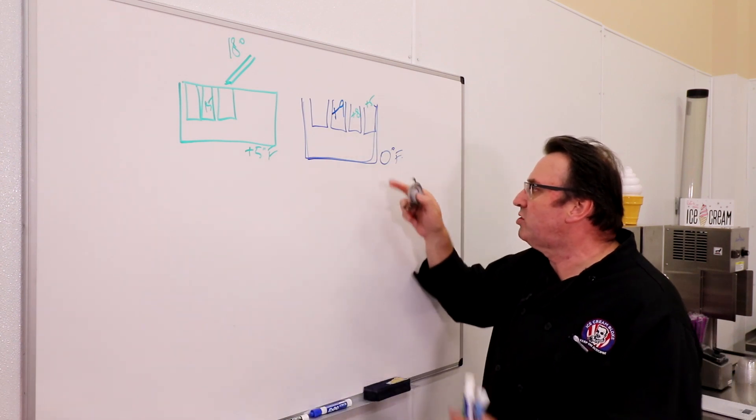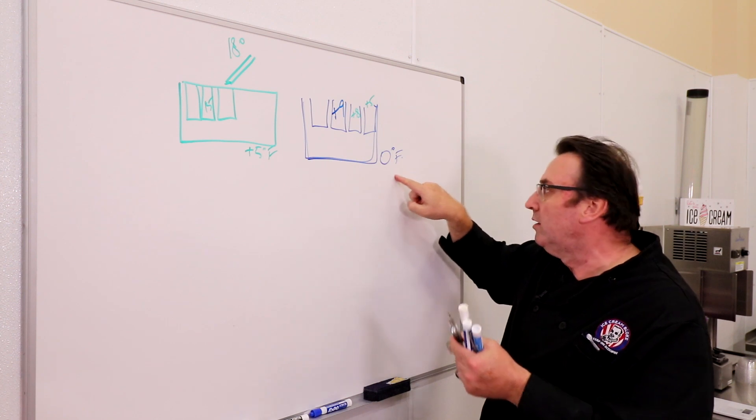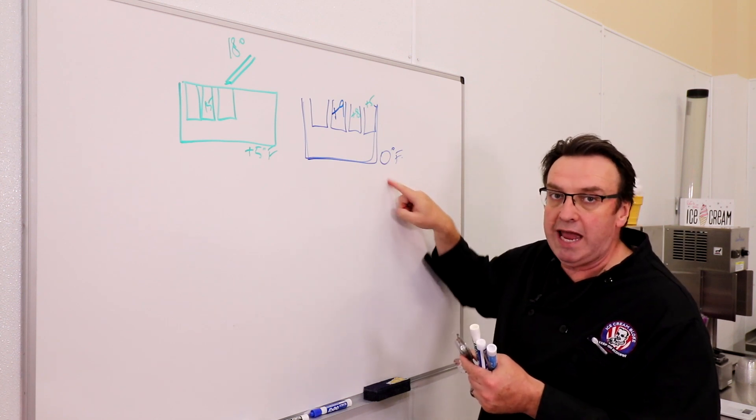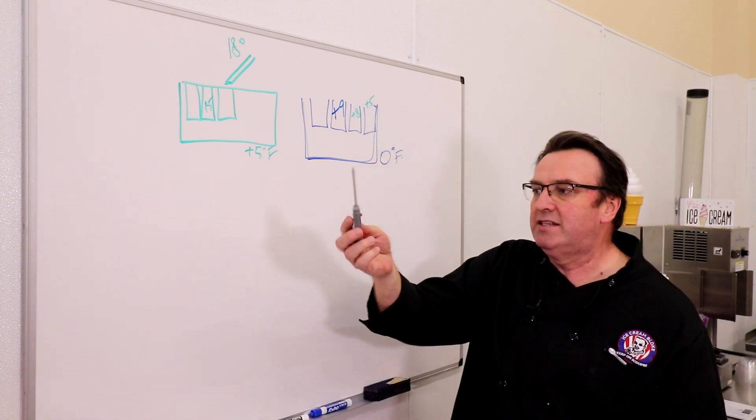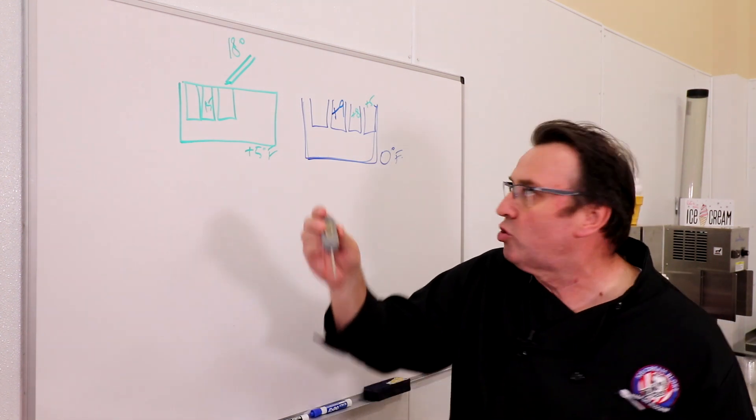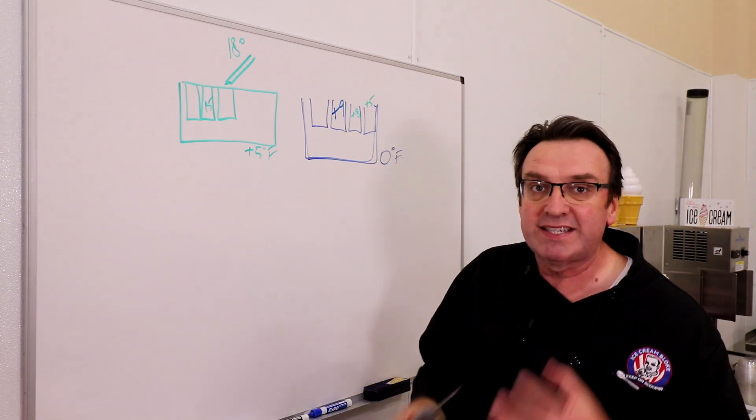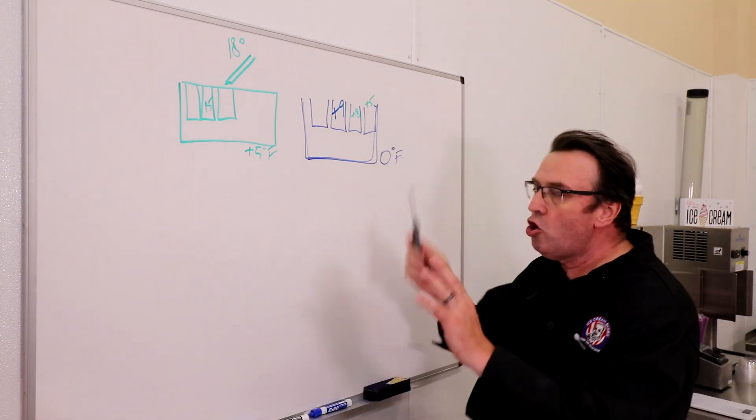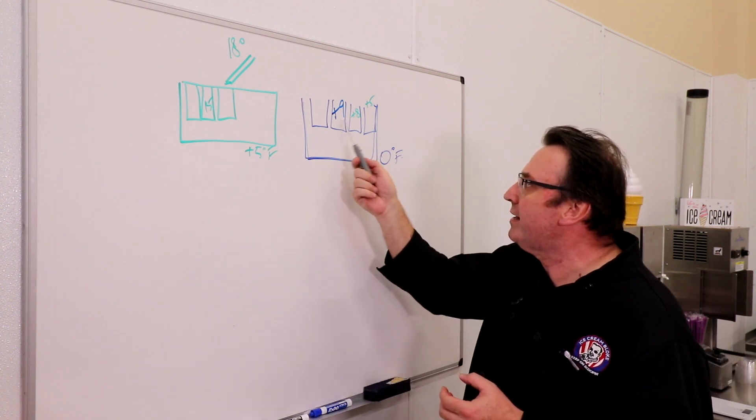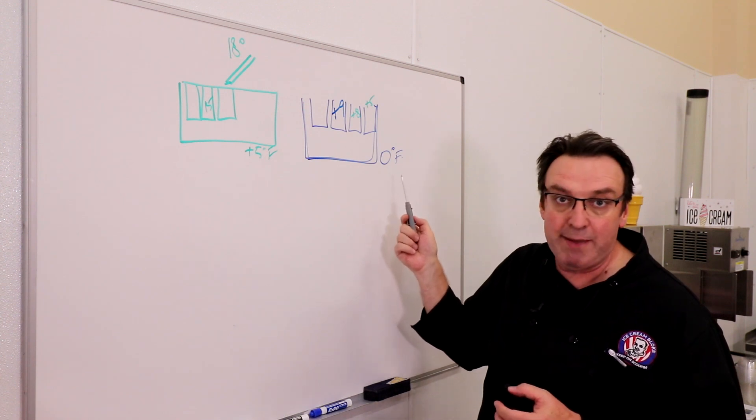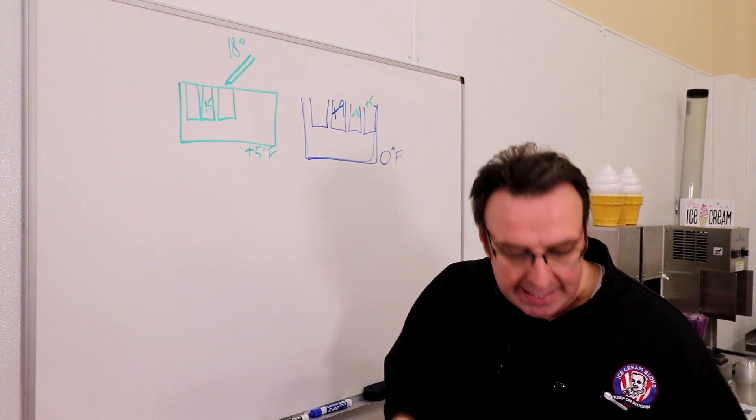So always make sure that you're backing up or corroborating your dial, what you set your cabinet at, with what your cabinet actually is at. And then use a digital probe thermometer to actually determine the temperature of your product, because they should be two different things. Not at any stage in your ice cream scooping situation should your product temperature be exactly the same as your cabinet temperature. If it is, you're going to need a hammer and chisel to get that off.